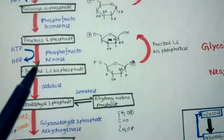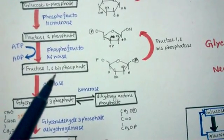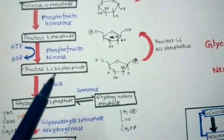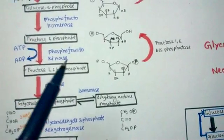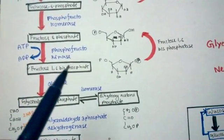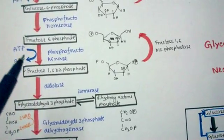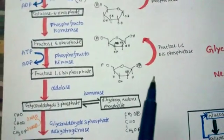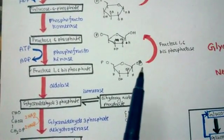In the next step, fructose-6-phosphate is converted to fructose-1,6-bisphosphate. Here again, another phosphate is added to the substrate, and the enzyme is another kinase — phosphofructokinase. With the help of this enzyme, ATP is hydrolyzed to ADP and the phosphate group is added to the first position of the sugar.